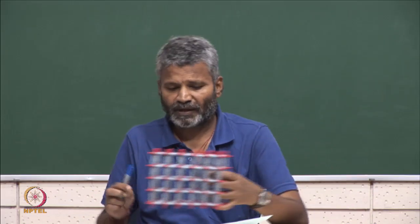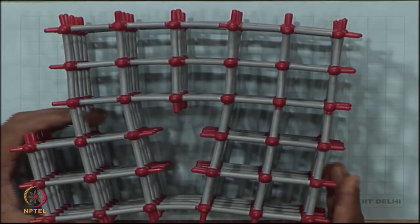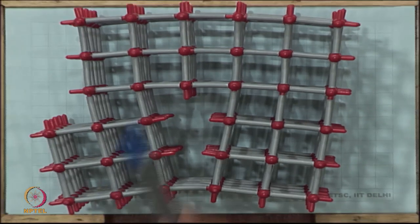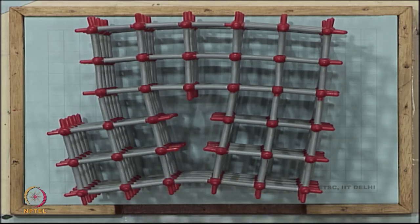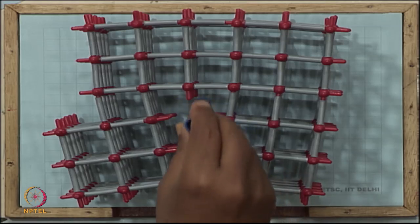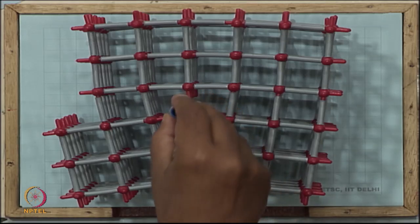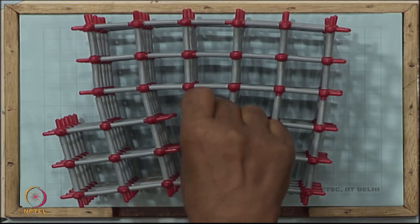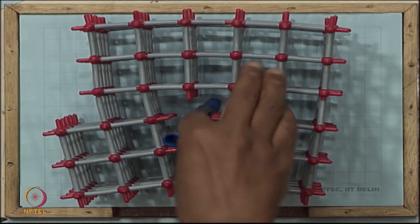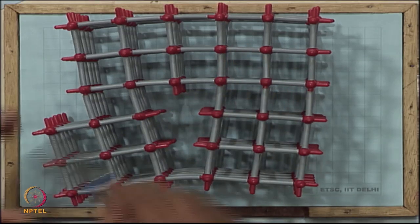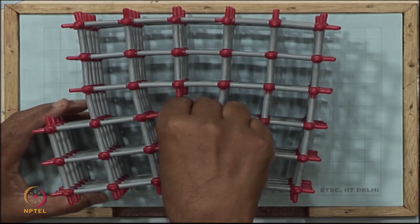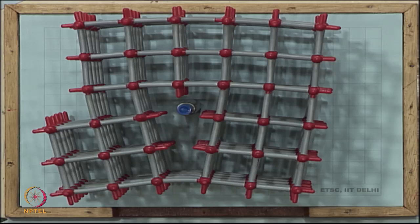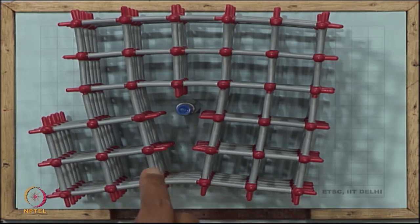Let us look at a model to picture the edge dislocation. You can see this is an extra half plane, and you can imagine the edge of this dislocation — the line going into your computer screen. I can put my pen parallel to the dislocation line here. That line indicated by the pen is the dislocation line.